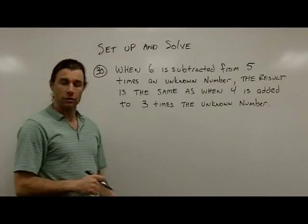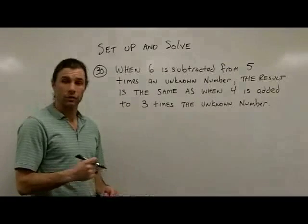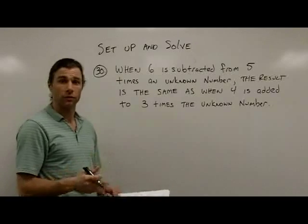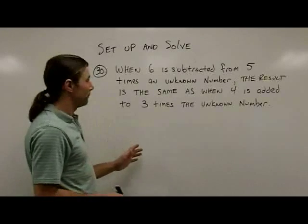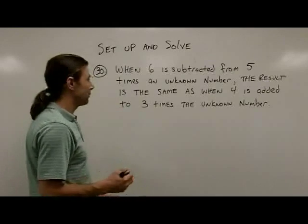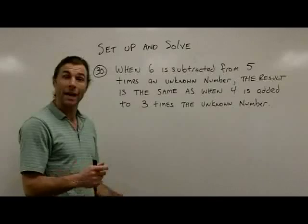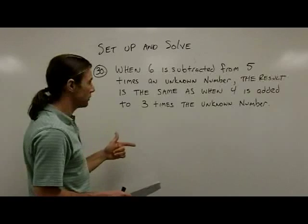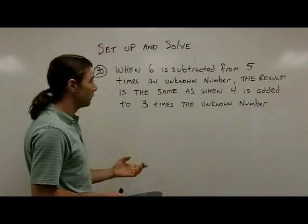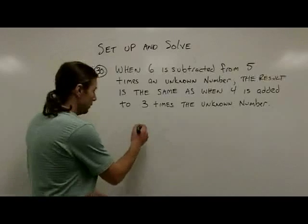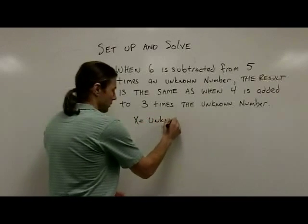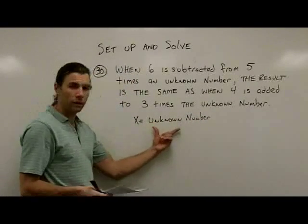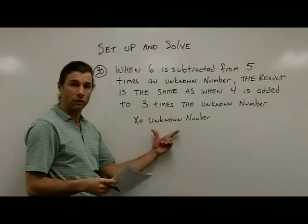The next type of problem asks us to translate words into an equation and then solve it — two parts. The problem says: when 6 is subtracted from 5 times an unknown number, the result is the same as when 4 is added to 3 times the unknown number. There is just one unknown here, so we translate words to math and then solve.